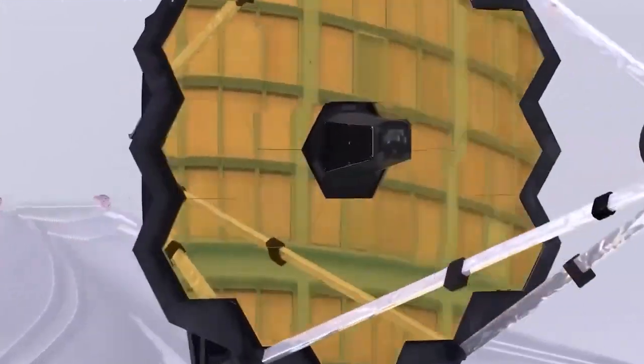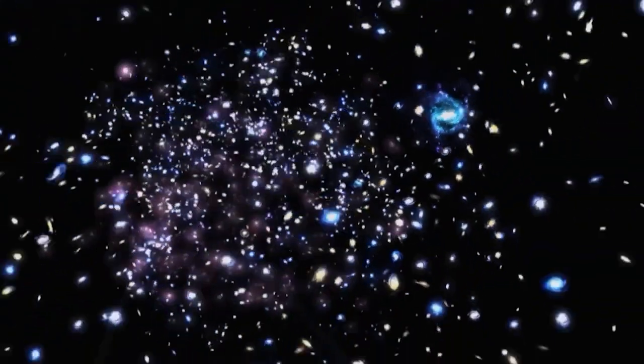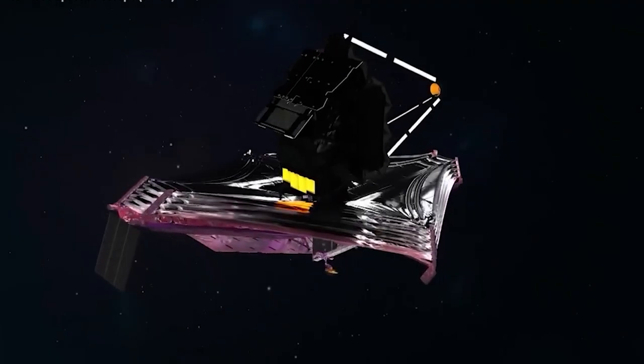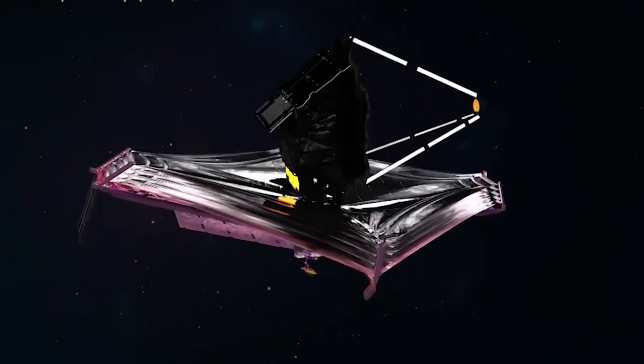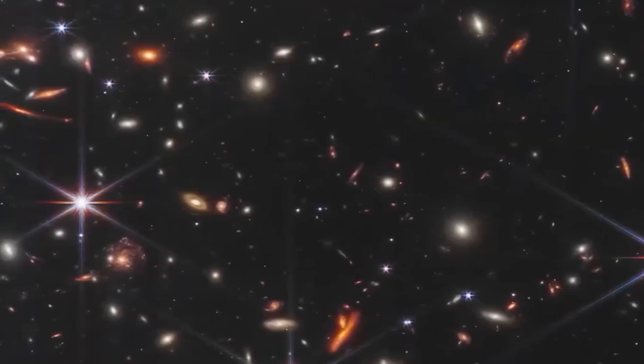Webb spied countless galaxies that Hubble missed. One of the first pictures NASA showed from Webb was a deep-field picture, which is a long-exposure view of a part of the sky, that lets the telescope catch the light of every faint, faraway object. NASA says that the picture was taken in less than a day.